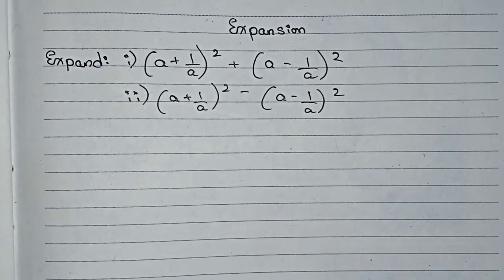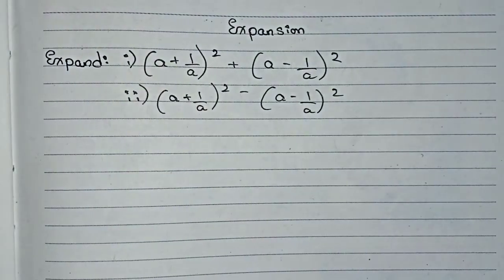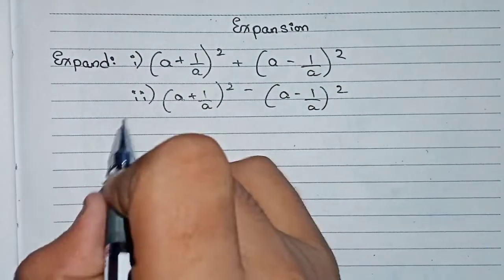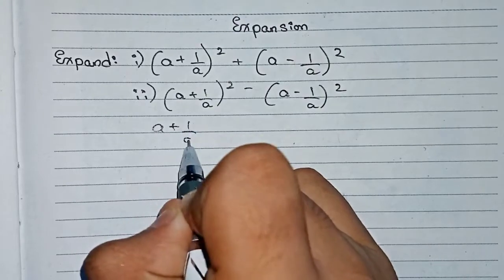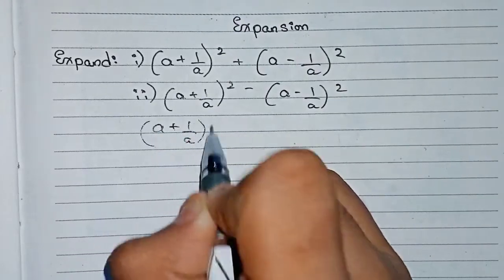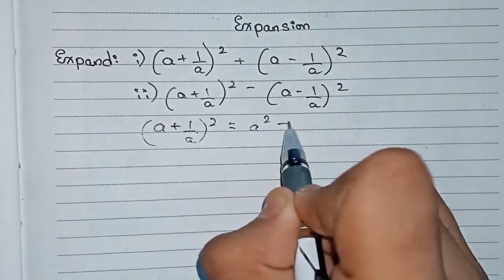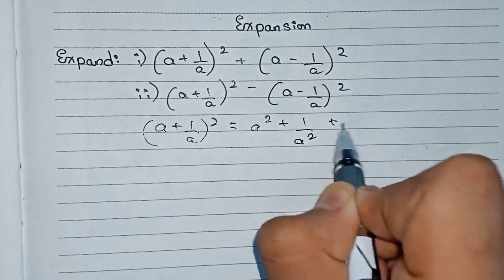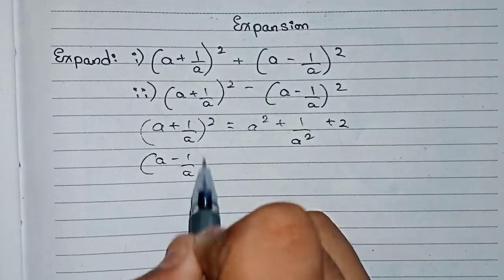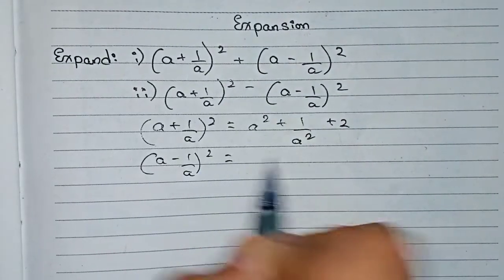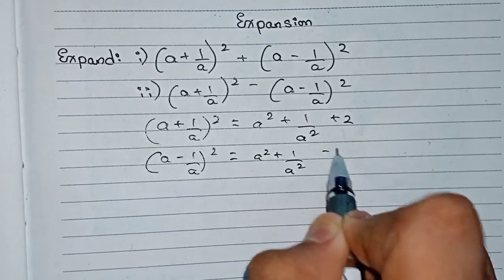For these two questions we will take two different identities. Our identities will be: (a + 1/a)² = a² + 1/a² + 2, and (a - 1/a)² = a² + 1/a² - 2.